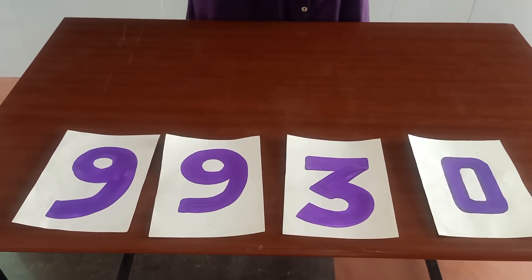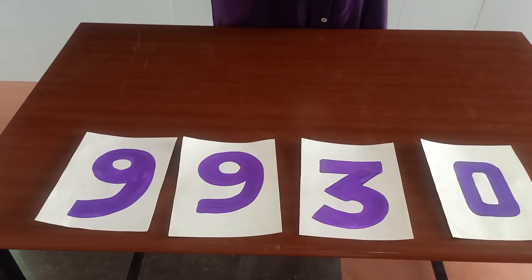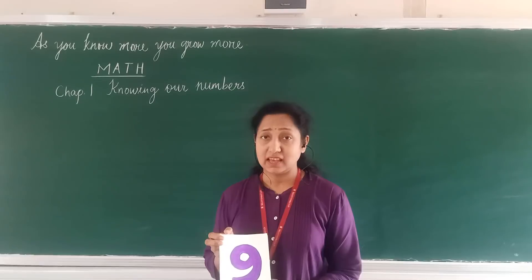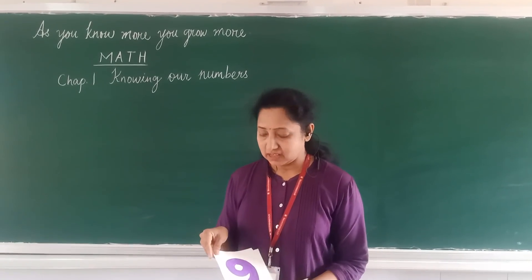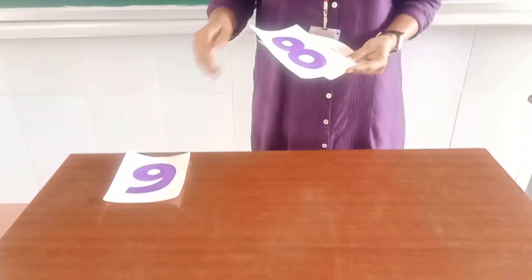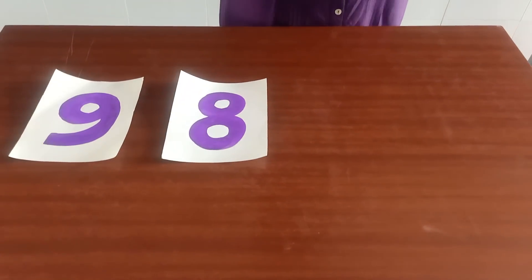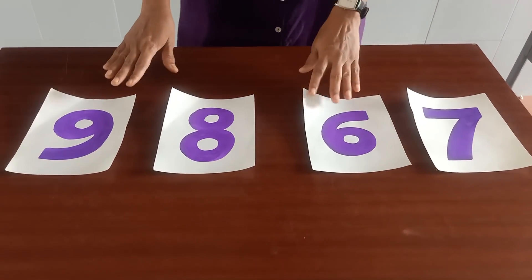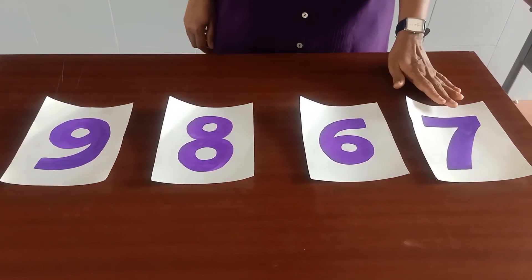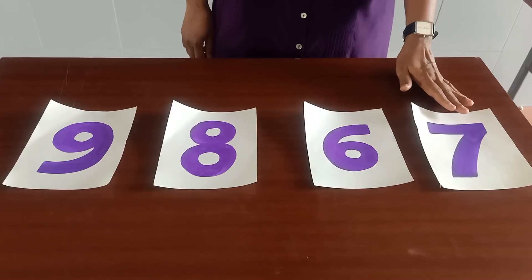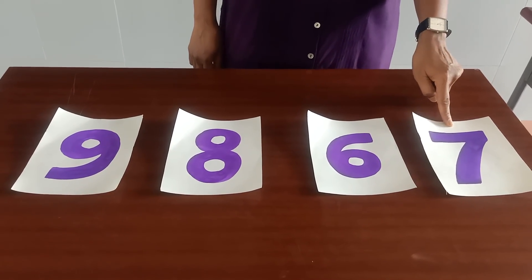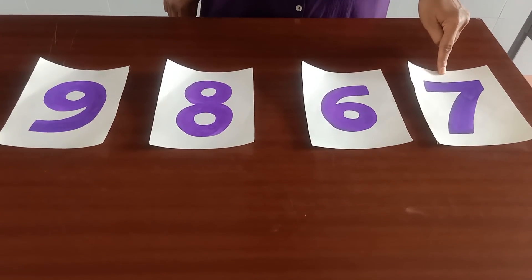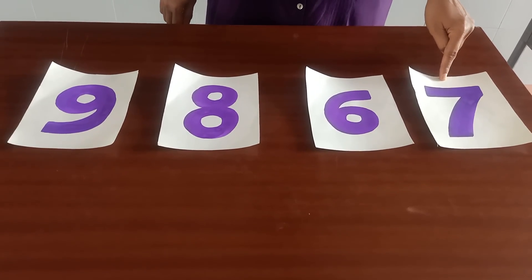Now you have to form the smallest number. Here we start with our third activity — again with the number cards and a different twist. I am using the digits 9, 8, 6, and 7. In this activity, the condition is: while forming the greatest number as well as the smallest number, 7 has to come at the 1's place.